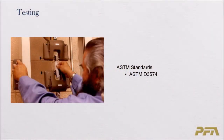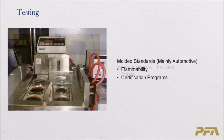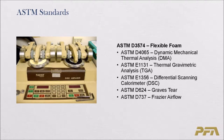I'm going to talk about testing standards and then briefly cover some certification programs. I'll start with the ASTM standards — American Society for Testing and Materials — and where appropriate list the ISO equivalents. ISO is an international organization for standardization. American standards are developed in the US, the ISO standards mostly in Europe; they're mostly equivalent with some minor technical differences. Next I'll briefly cover some molded standards, mainly the automotive flammability, and then certification programs.